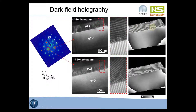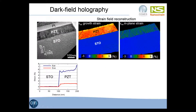Once we have these two images corresponding to two different vectors, we can combine them to reconstruct the two-dimensional strain field. This is a map of the strain calculated in the growth direction, and here is the strain in the in-plane direction. Two profiles extracted from the maps show that the strain in the growth direction is about 5 to 6%, corresponding to the difference between the C parameter of the PZT and the parameter of the STO.